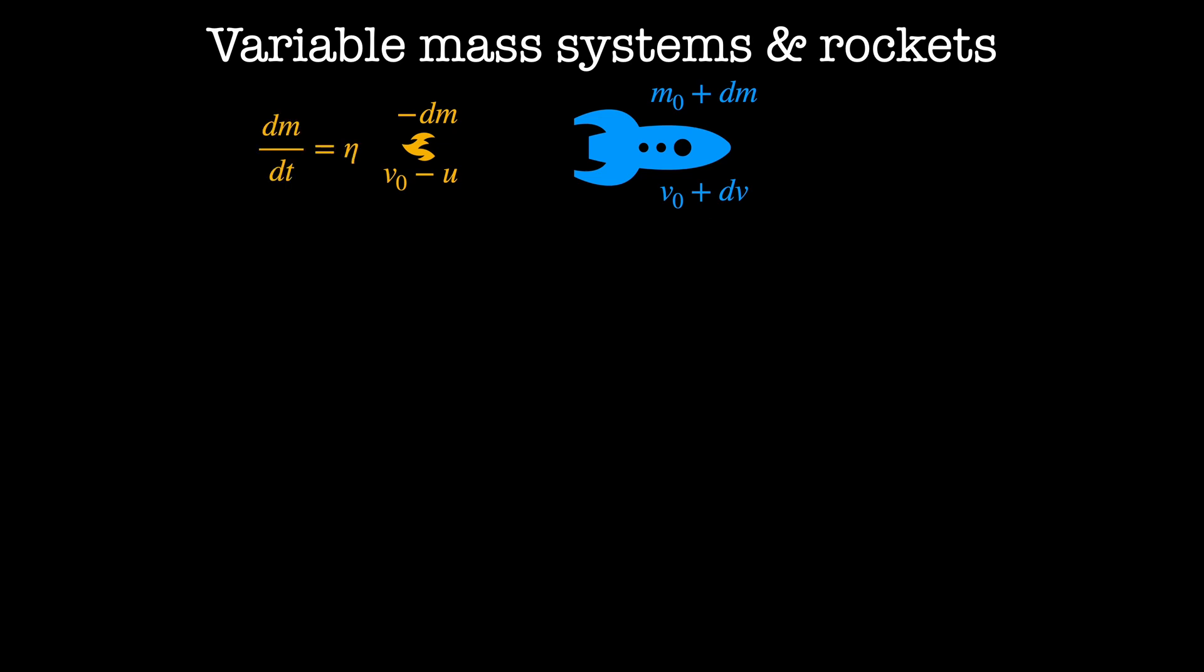In this example, the rocket is losing fuel at a constant rate, that is, eta equals dm by dt. This means that after time t, the rocket has lost fuel of mass eta times t, and the mass of the rocket as a function of time is now given by m-naught minus eta times t.